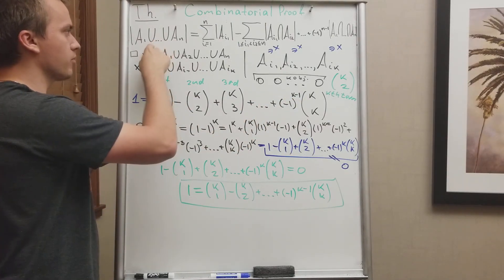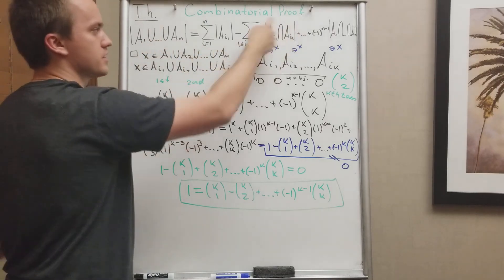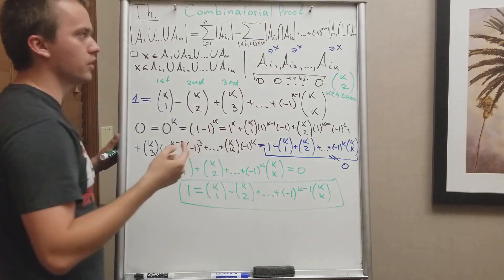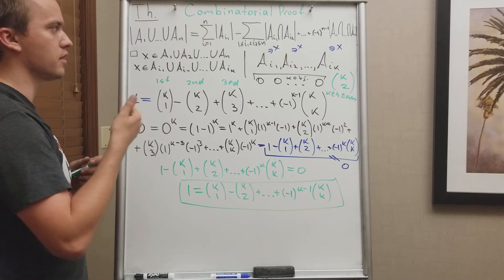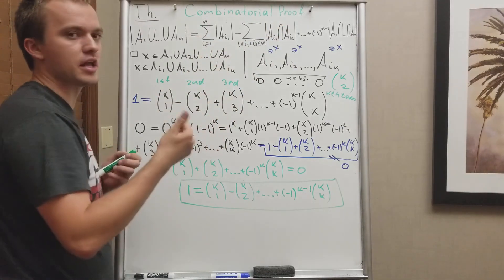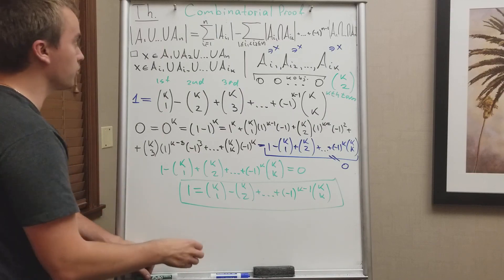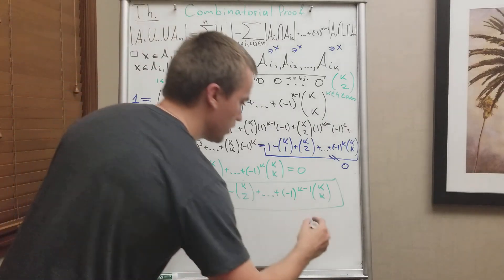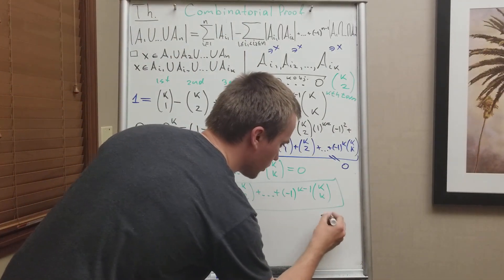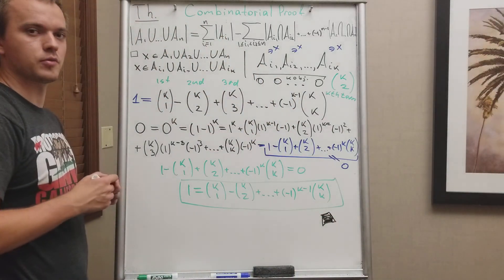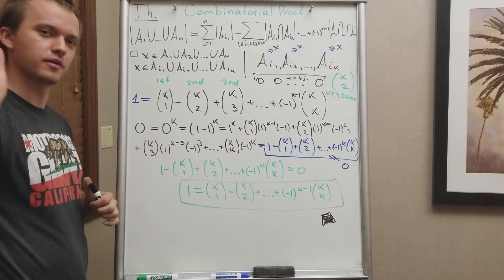So every time when I choose an element on the left-hand side, this formula will count this element only once. This is the combinatorial proof for the inclusion-exclusion principle, and I think it's really cool. Thank you for watching, and if you have any questions, let me know. Bye-bye.